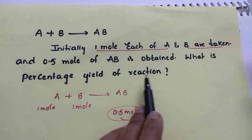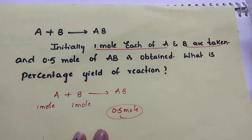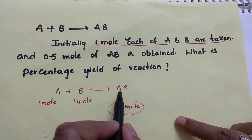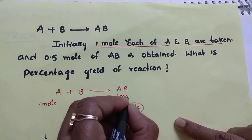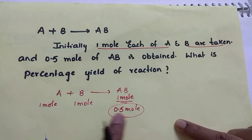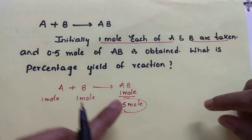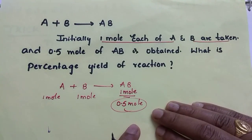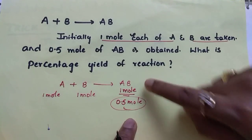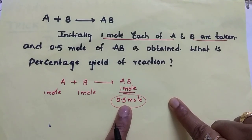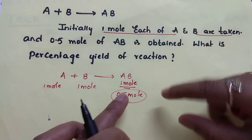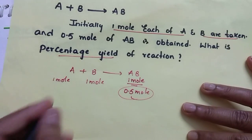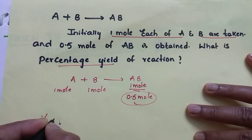What is the percentage yield of the reaction? With common sense: if one mole of A reacts with one mole of B, how much AB will we get? One mole. But how much did we get? Only 0.5 mole. 0.5 is exactly half of one, which means 50% yield. We expected one mole and got only 0.5 mole — that is 50% yield.